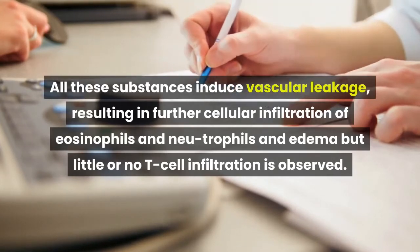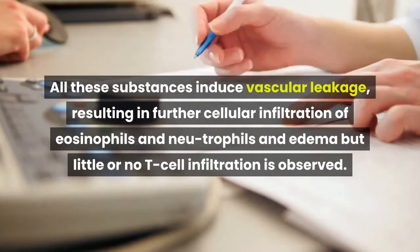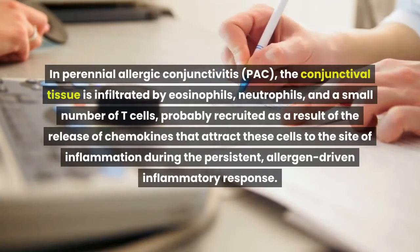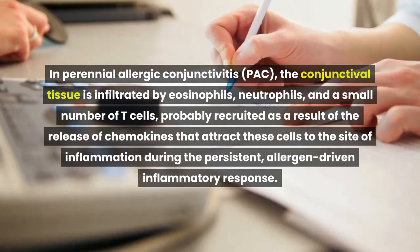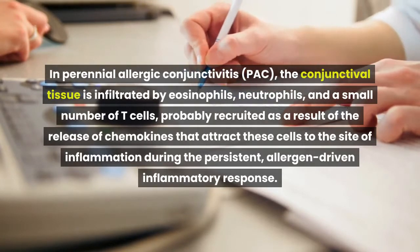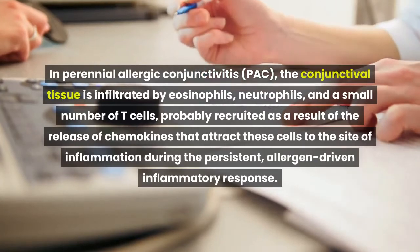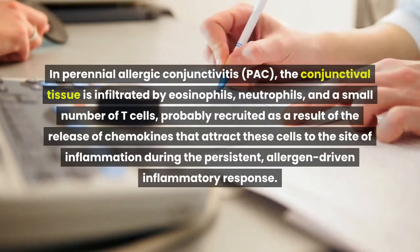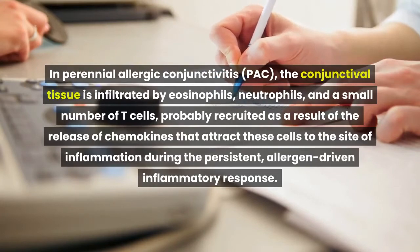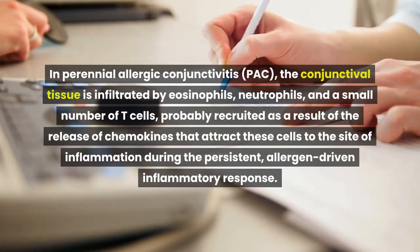Little or no T-cell infiltration is observed in SAC. In perennial allergic conjunctivitis (PAC), the conjunctival tissue is infiltrated by eosinophils, neutrophils, and a small number of T-cells, probably recruited as a result of the release of chemokines that attract these cells to the site of inflammation during the persistent allergen-driven inflammatory response.